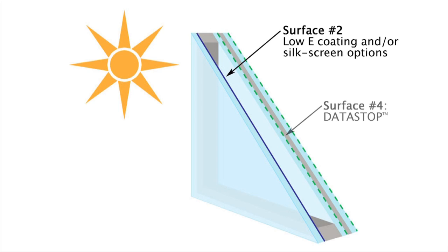Pilkington has applied Datastop to surface number four to reduce electrical attenuation. A PVB inner layer is added to the glass construction to increase the glass strength and to enable a second layer of Datastop on surface number six to further reduce electrical attenuation.